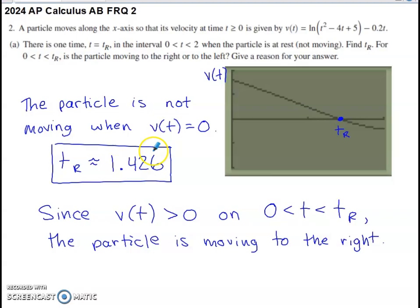First part of this: when is the particle at rest? It's at rest when the velocity is equal to zero. It's not moving to the right, not moving to the left. It is technically at rest when the velocity is zero. Where does that happen?